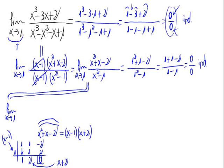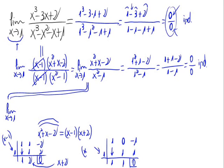Now simplifying the denominator x squared minus 1: coefficients are 1 for x squared, 0 for x, and minus 1 for the independent term. Trying with 1: 1 times 1 is 1, 0 plus 1 is 1, 1 times 1 is 1, and minus 1 plus 1 is 0. So the denominator equals x minus 1 times x plus 1.